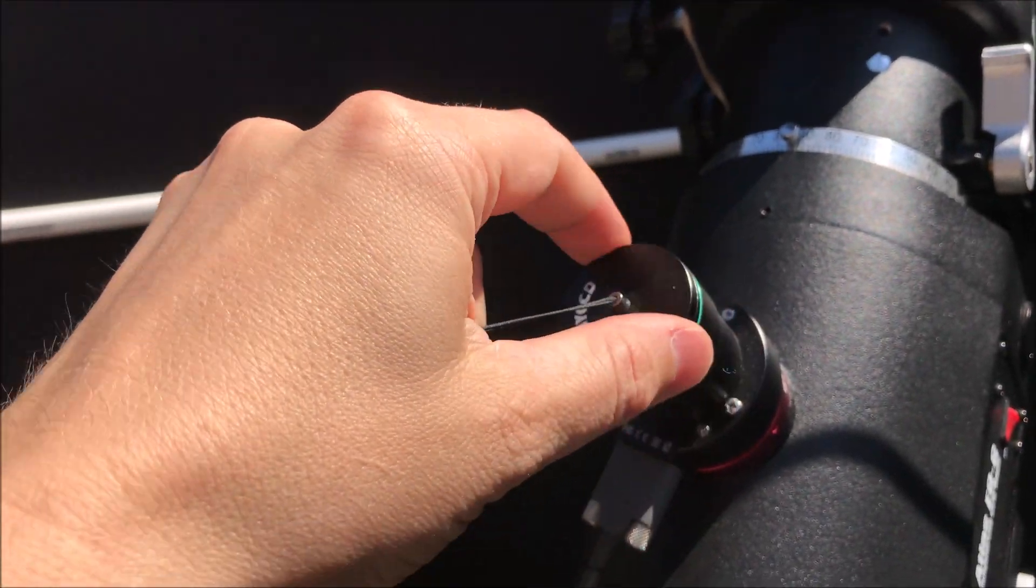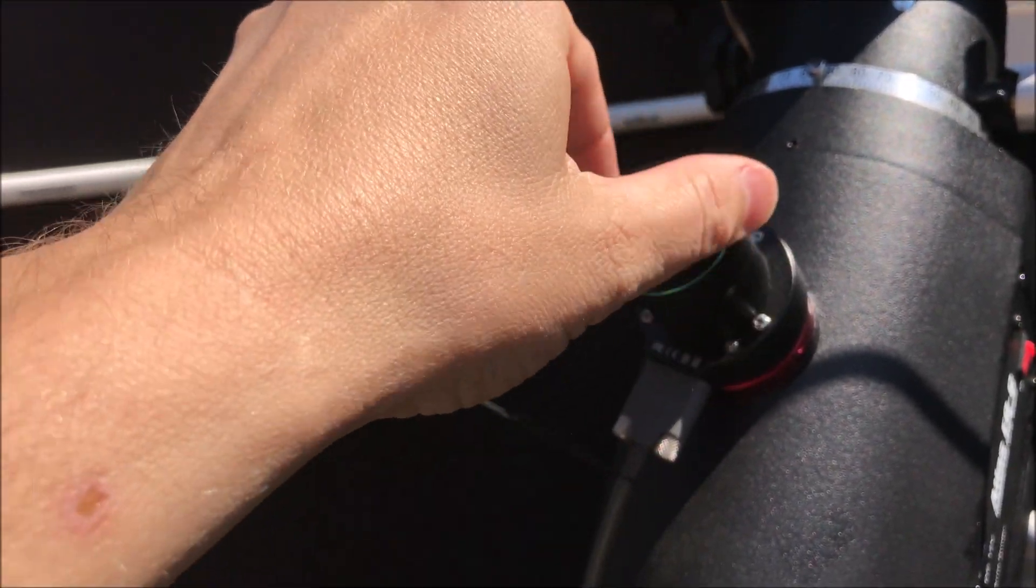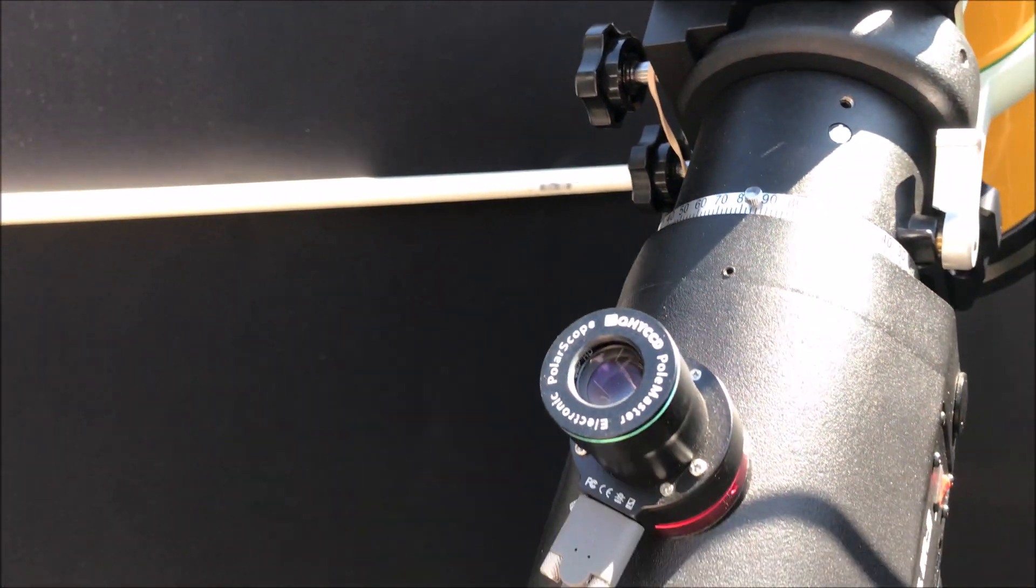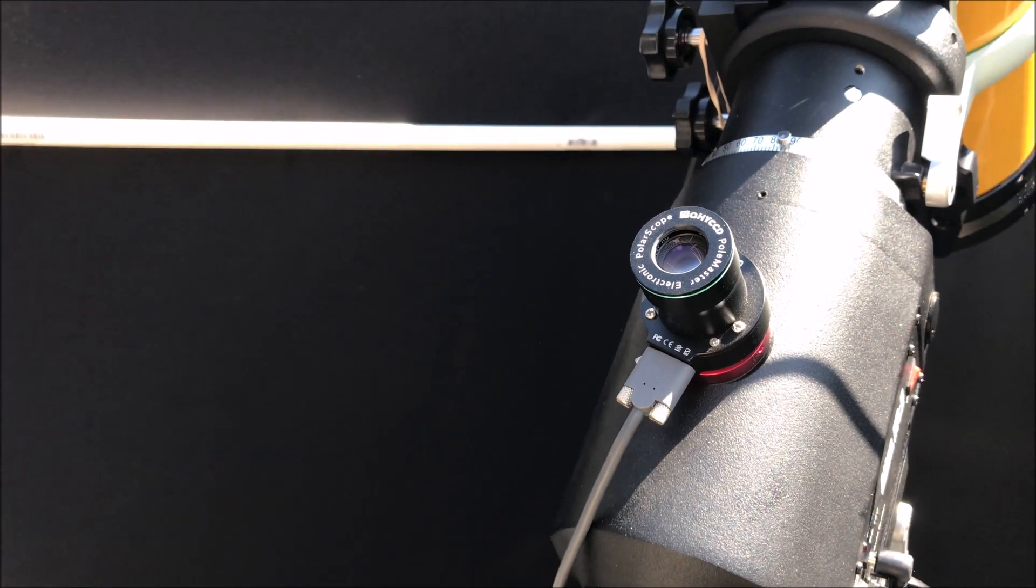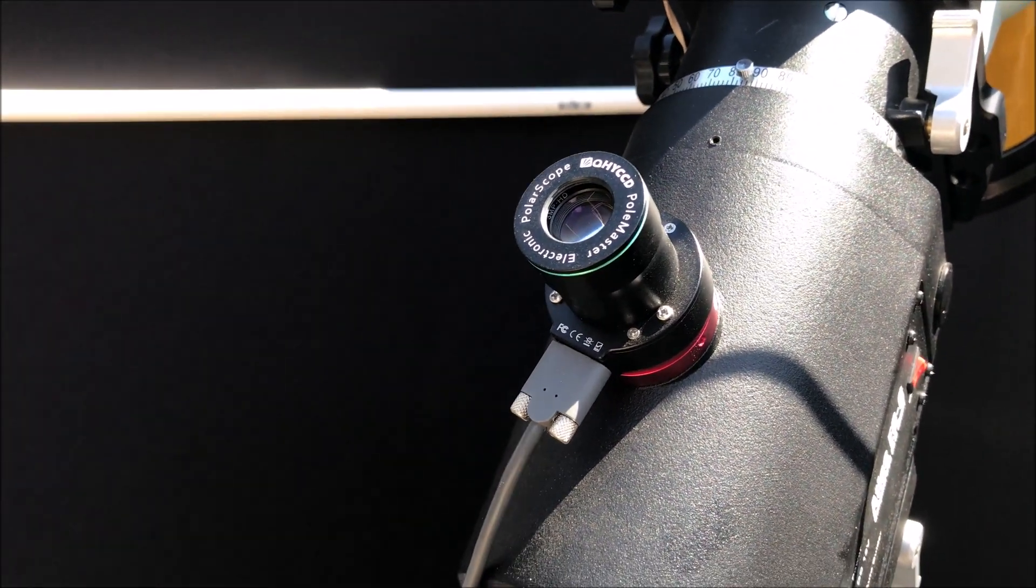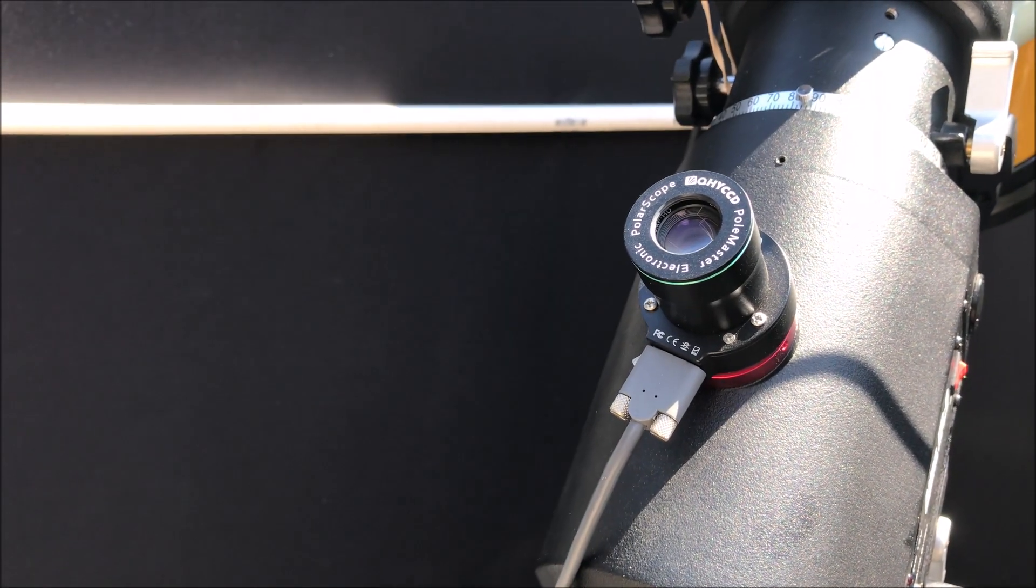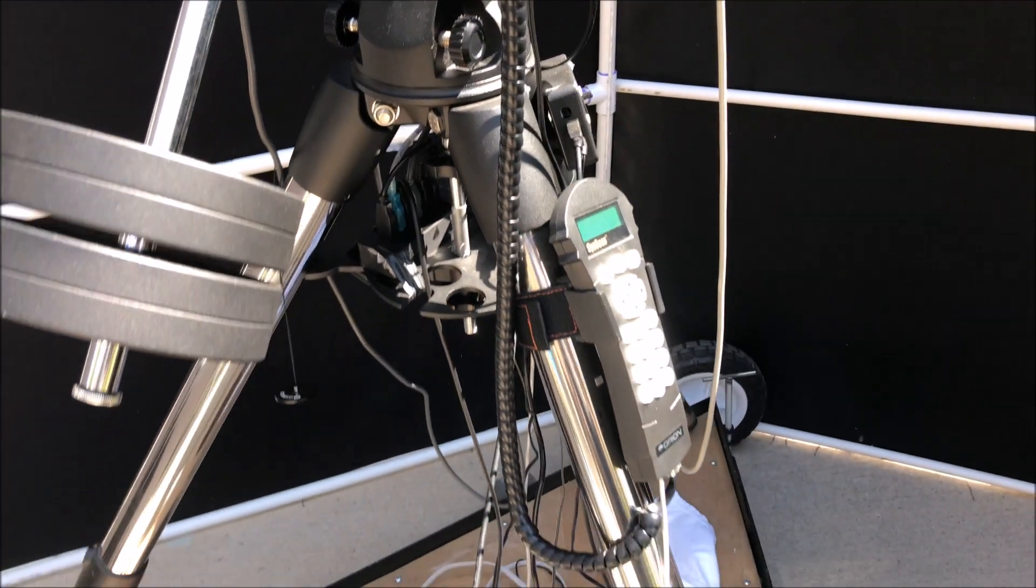This is the PoleMaster here on the front and this I think is a must-have to get this thing polar aligned. I've got my polar alignment down to no more than a couple minutes, maybe five minutes at the most with this. So there's some videos you can watch on how to do that, to align your scope using PoleMaster.